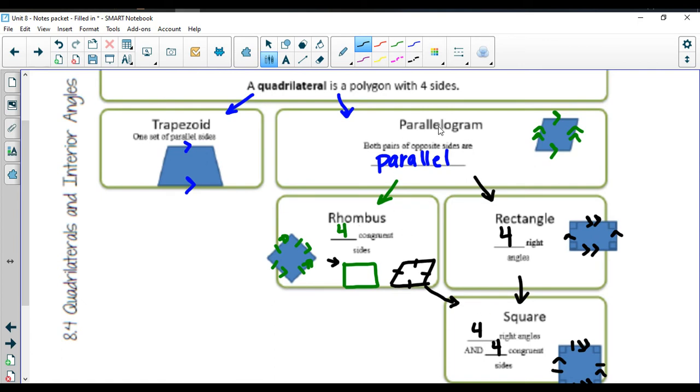There are also two sets of parallel lines here. Because a square is a type of rectangle, a square is a type of rhombus, and a square is a type of parallelogram. And a square overall is still considered a quadrilateral because it has four sides.